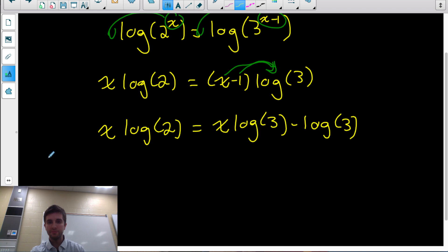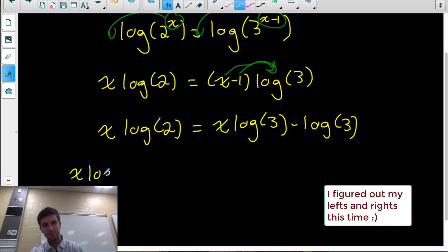I now have two terms that have a variable. I have an x log 2 and an x log 3. Whenever you have multiple variable terms, you want to bring them to the same side of the equation. So I'm going to bring them to the left side. I'll leave the x log 2 and bring over the x log 3 by subtracting it. So x log 2 minus x log 3 equals negative log 3.